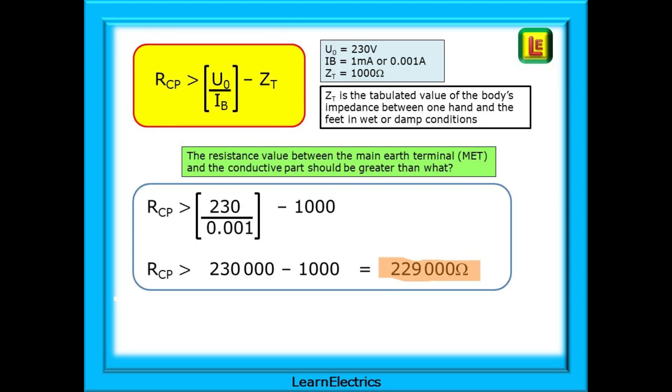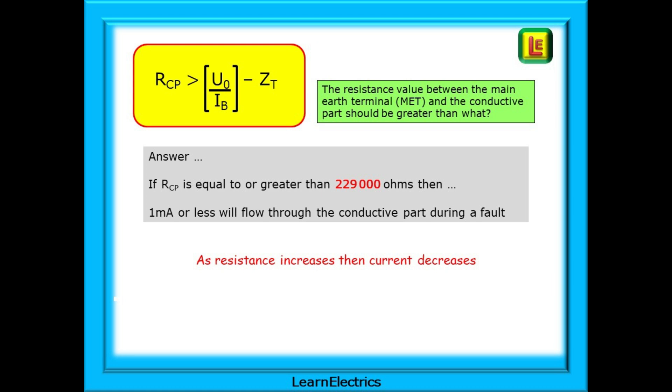Here's the formula, and to the right is the information that we know. Again, this is Ohm's law. We have a voltage, a current, and a resistance. So let's answer the question. For not more than 1 milliamp to flow, the resistance value between the main earth terminal and the conductive part should be greater than what. Pause the video and follow the calculation through, breaking it down into nice easy steps. Done correctly, the answer should be 229,000 Ohms. And calculating the answer is as easy as that. If RCP is equal to or greater than 229,000 Ohms, then 1 milliamp or less will flow through the conductive part during a fault. And if the resistance increases, the current will decrease further.